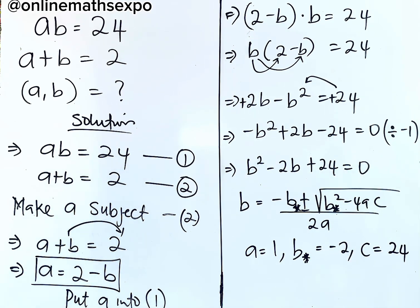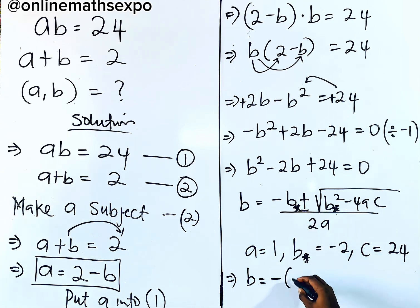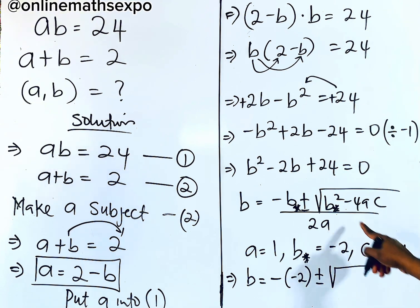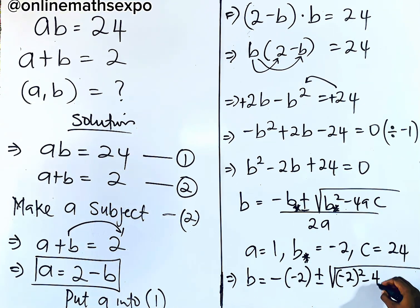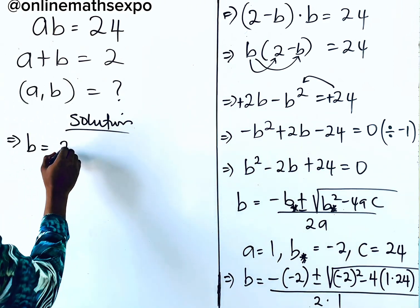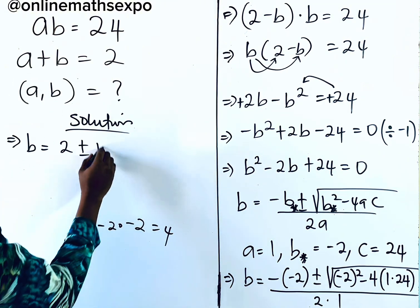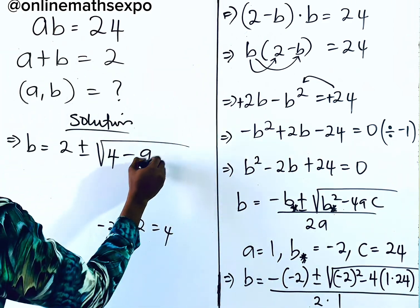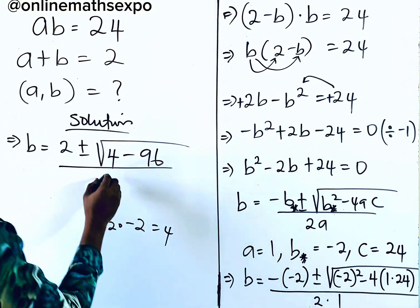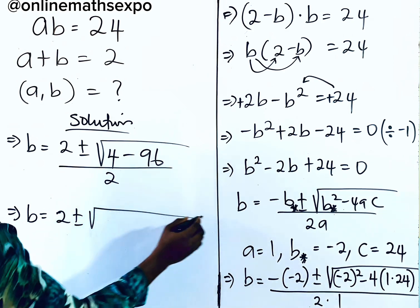Plugging into the formula: b = (−(−2) ± √((−2)² − 4 × 1 × 24)) / (2 × 1). Simplifying: negative times negative gives positive 2. (−2)² = 4. 4 × 1 × 24 = 96. So we have b = (2 ± √(4 − 96)) / 2, which gives b = (2 ± √(−92)) / 2.